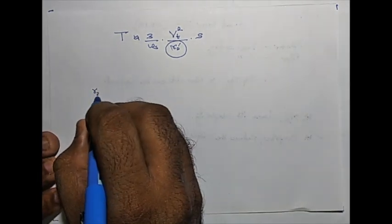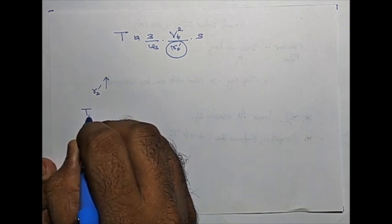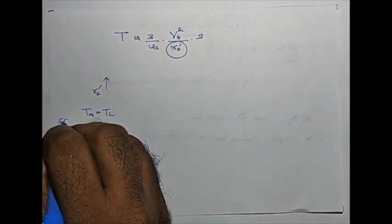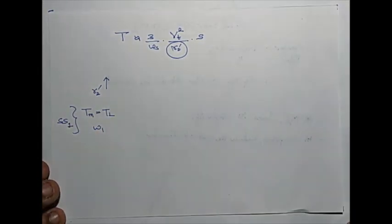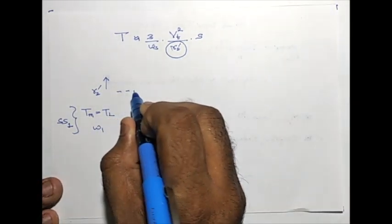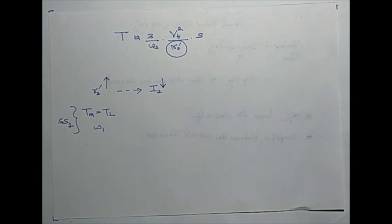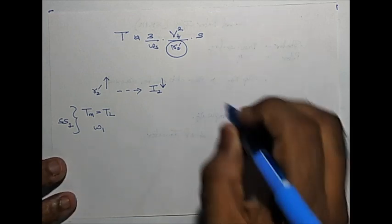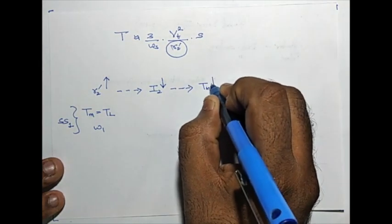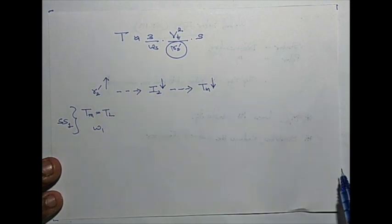Suppose we increase R2 dash — the rotor resistance — by adding an external resistor in the rotor circuit. The machine was operating at steady state where Tm equals TL and ω₁ was the steady state speed. Now from that point, increasing rotor resistance causes the immediate reaction to be a decrease in rotor current by Ohm's law. As excitation voltage remains the same and resistance increases, the current falls, and if the current falls the developed motor torque will also fall. Motor torque has now gone below the value of load torque.